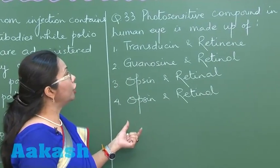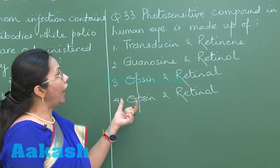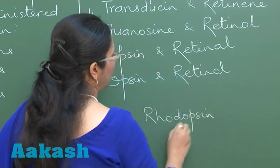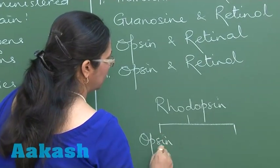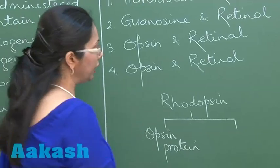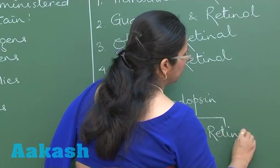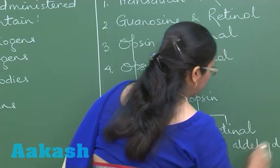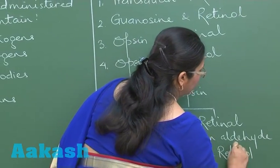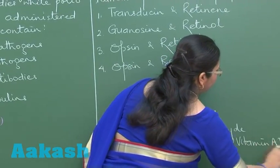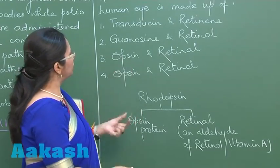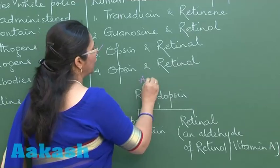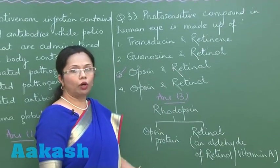In question 33, the photosensitive compound in the human eye is rhodopsin, which is made up of two things: a protein called opsin, and an associated compound that is retinal — an aldehyde of retinol, which is vitamin A. So option 3, opsin and retinal, is the correct answer.